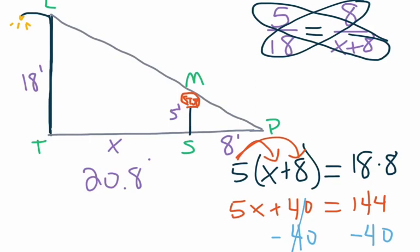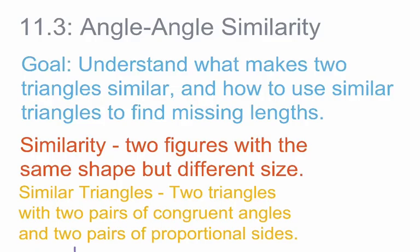Write down any questions that you might have. Hopefully at this point you're able to better understand what makes two triangles similar and how to use similar triangles to find the length of a missing side. Write down any questions so that we can go over them together in class.